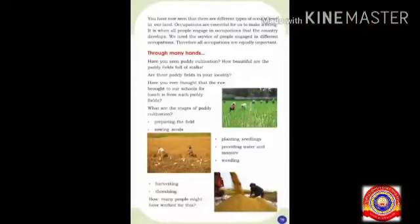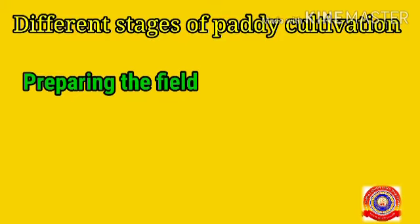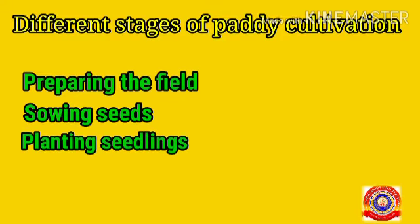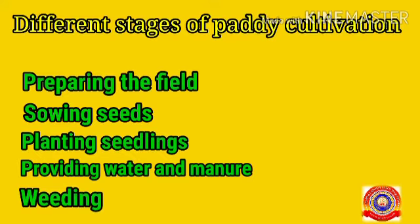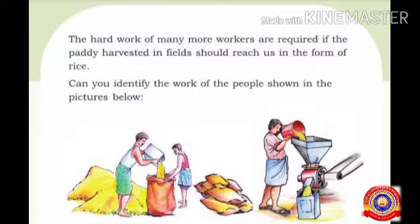In our last class we discussed the different stages of paddy cultivation. Can you tell me those stages? Yes: first, preparing the field, then sowing seeds, planting seedlings, providing water and manure, weeding, harvesting, and the last one — threshing. So we know that the different stages required for paddy cultivation, through the hard work of many workers, give us paddy in the form of rice.